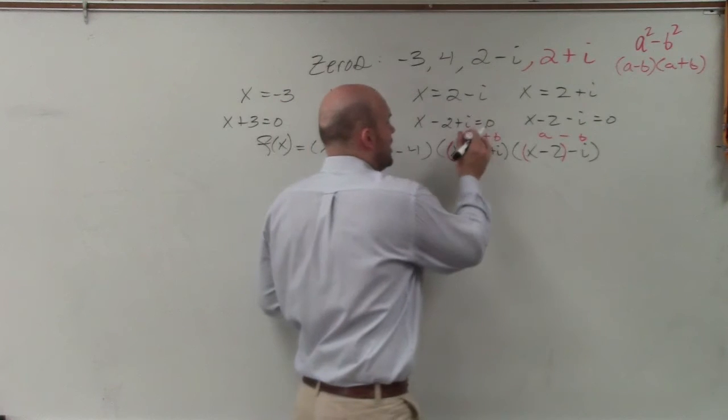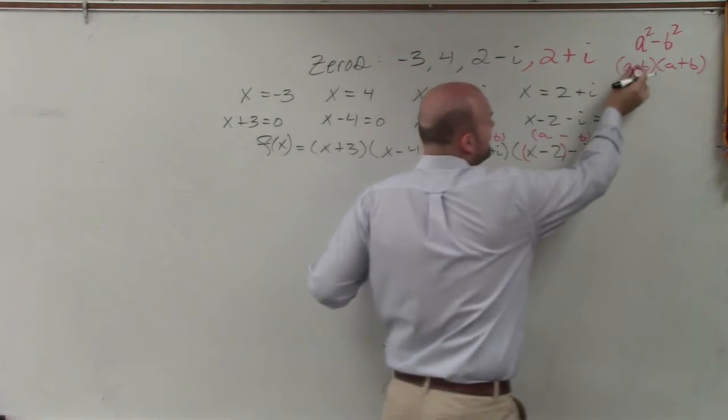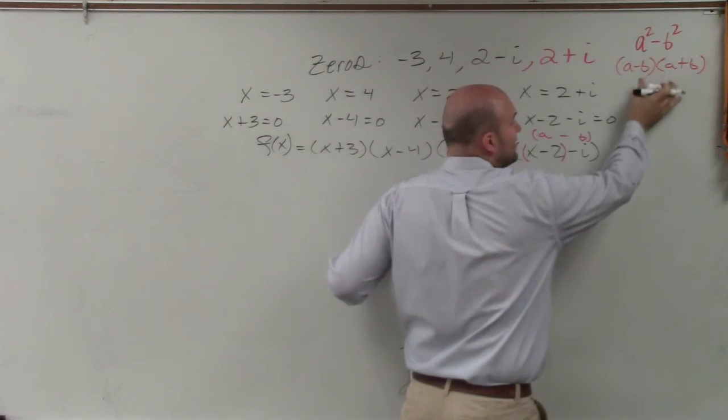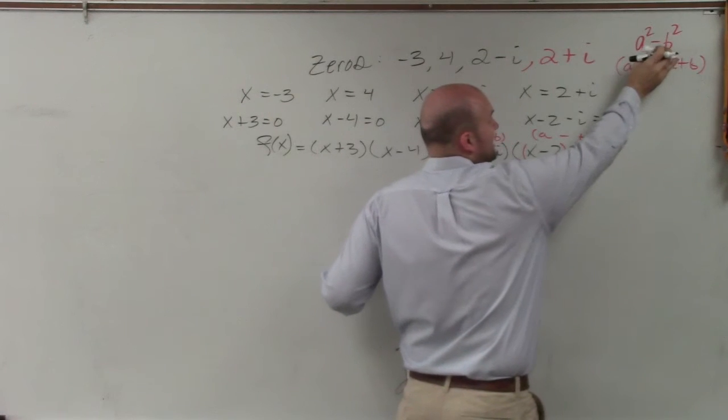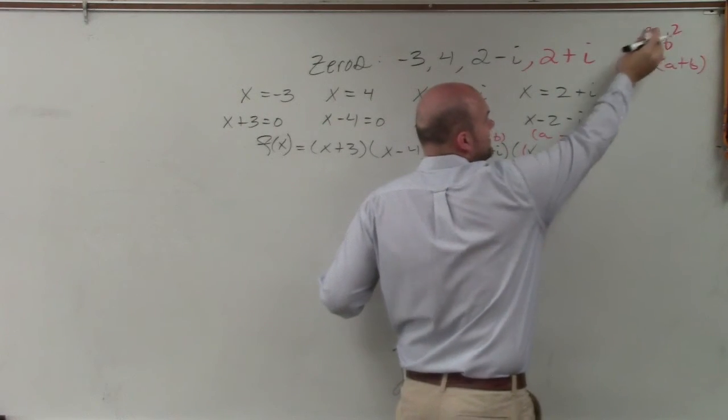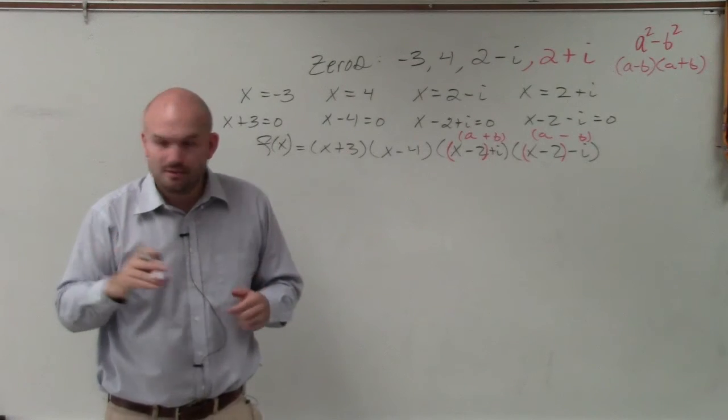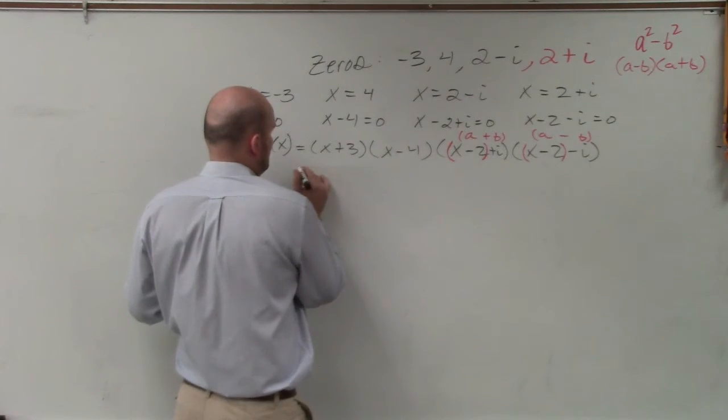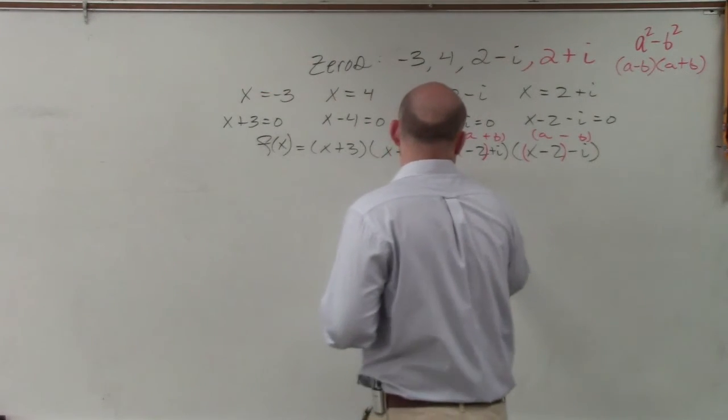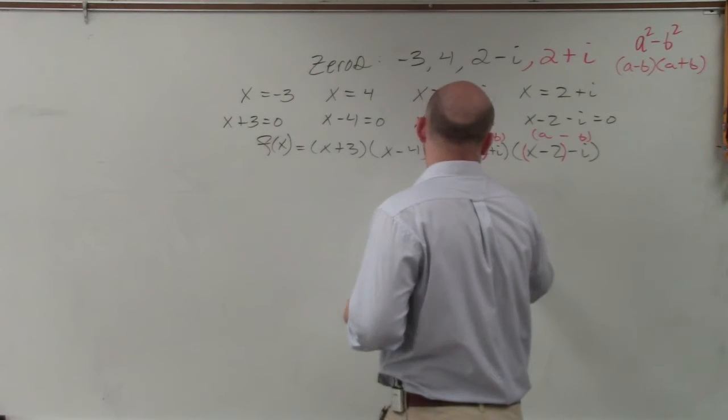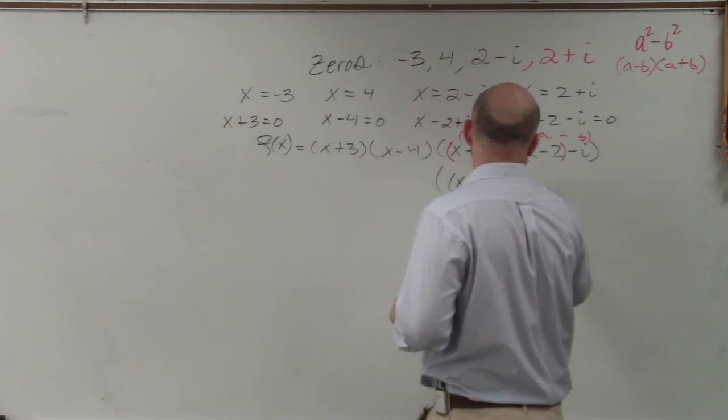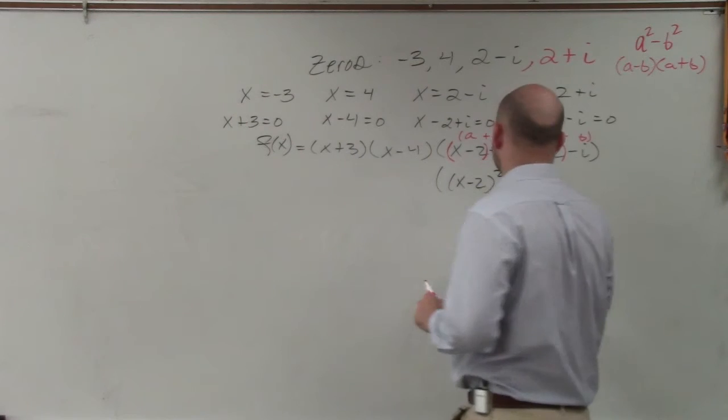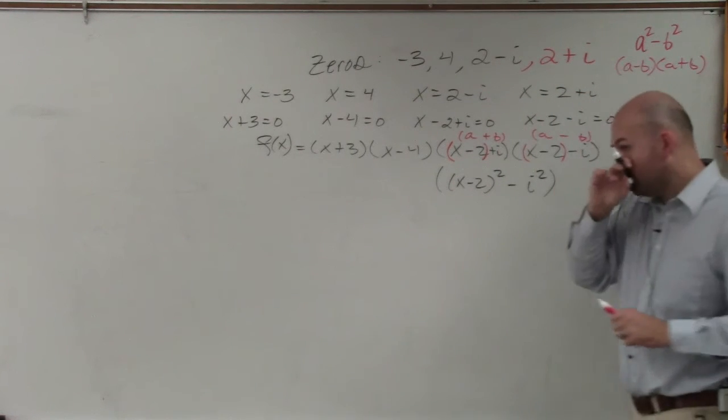So basically, all I'm simply doing is if I have (a-b)(a+b), I can multiply it out to give me a² minus b². Therefore, what I have here is (x-2)² minus i².